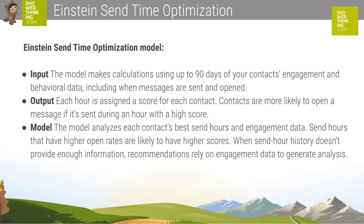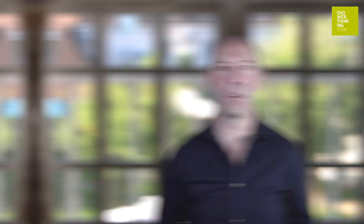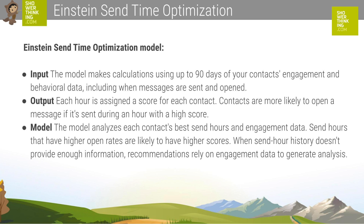The machine learning model is based on three areas. For input, the model performs calculations using up to 90 days of engagement data and behavior of your contacts, including when messages are sent and opened. For output, each hour is assigned a score for each contact — contacts are more likely to open a message if it is sent during an hour with a high score. Send times that have higher open rates are more likely to have a higher score. When the sending time history does not provide enough information, recommendations are based on engagement data.